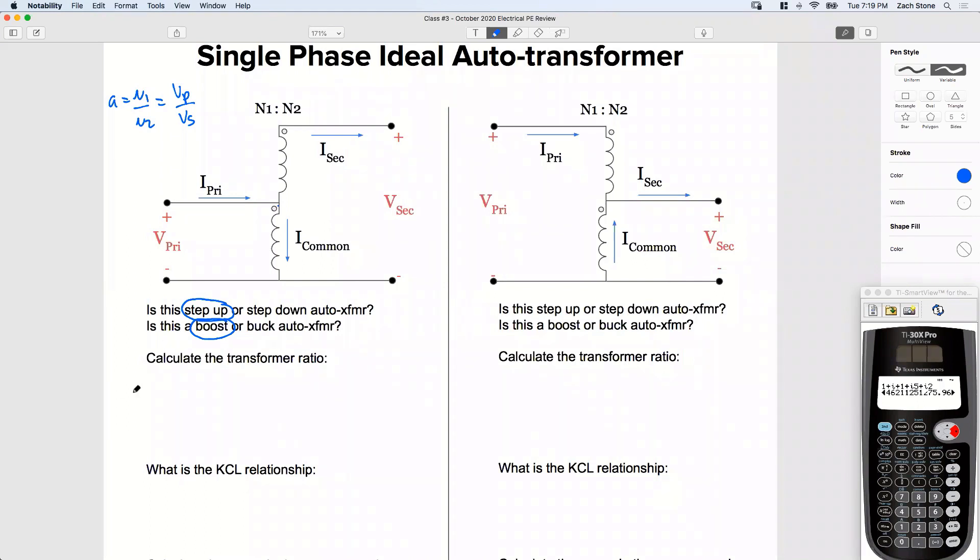Transformer ratio. Okay, we'll start with A. Transformer ratio is defined by A. What is A equal? A equals N1 divided by N2. This is true for a regular transformer too.